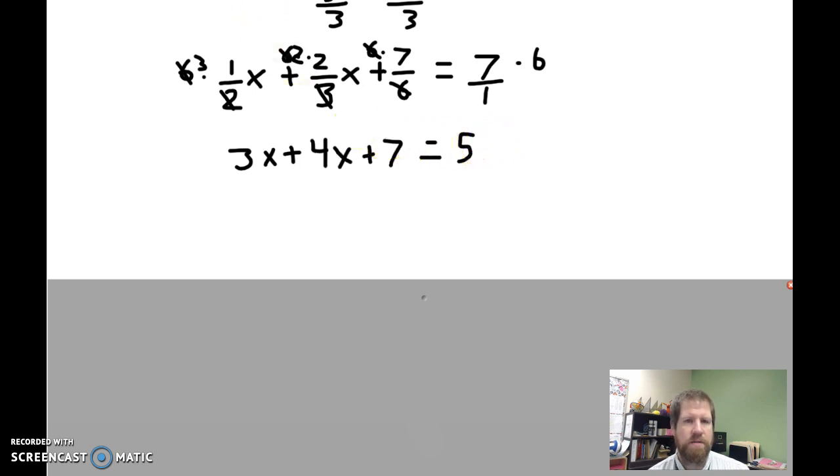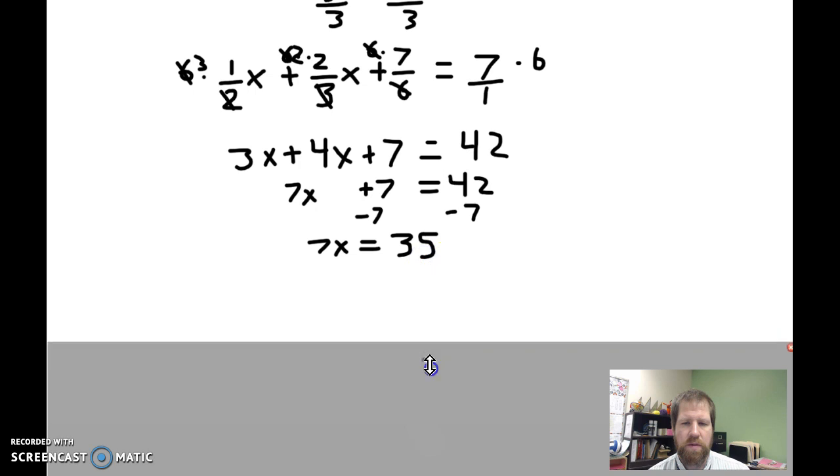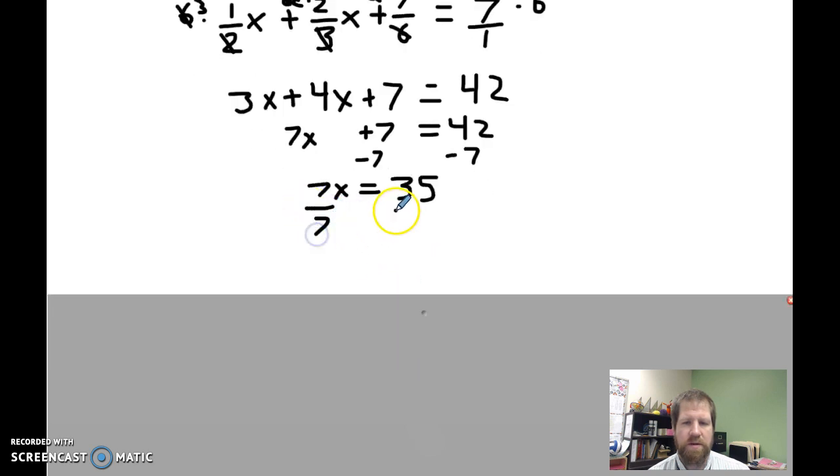7 times 6, 42. So now I combine my like terms. I have 7x, and I still have my plus 7, equals 42. Subtract by 7, and I have 7x equals 42 minus 7, which should be 35. Divide by 7. I have x is equal to 5.